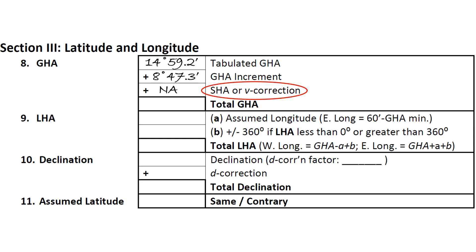Now we calculate our total GHA by simply summing these three terms, remembering to subtract any terms with a negative value. In our example, this gives us a total of 23 degrees and 46.5 arc minutes.